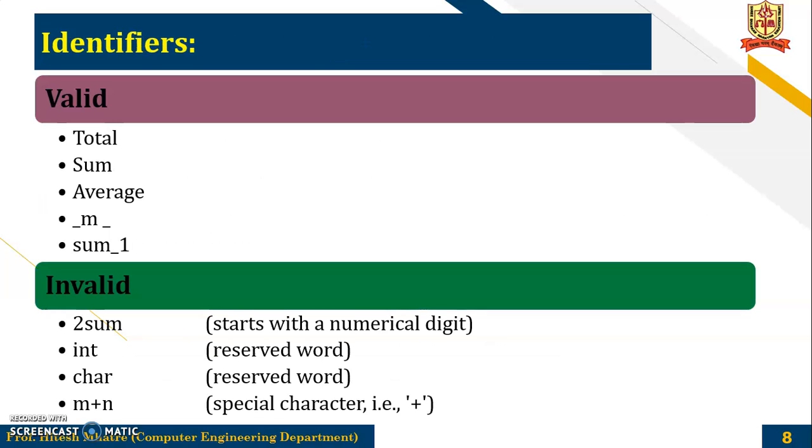Now here are some of the examples. Now you can see here these are the valid examples say total, sum, average. So these are like identifiers which is used to calculate total, to calculate sum, to find average. Then again see here only the special character that is underscore m and underscore. So this is also valid. Then sum underscore one.